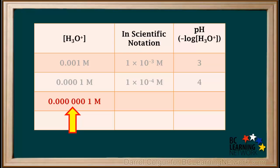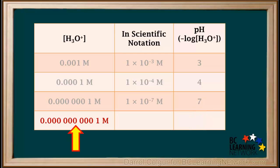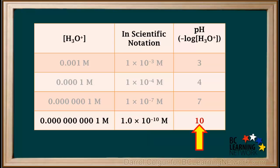In pure water at 25 degrees, the hydronium ion concentration is 0.00001 molar, which is the same as 1 times 10 to the negative 7 molar, so the pH is equal to 7. In a certain basic solution, the hydronium ion concentration is 0.00000001 molar, which is 1 times 10 to the negative 10 molar, so the pH is equal to 10.